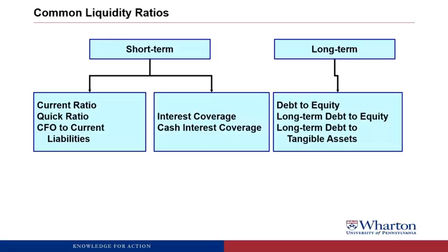We can put the liquidity ratios into three buckets, two short-term and one long-term. The first short-term bucket focuses on current assets and current liabilities — do you have enough current assets to cover upcoming current liabilities? The second looks at whether you'll have enough liquidity to cover interest costs. The long-term liquidity ratios address riskiness: is the firm too highly levered, with a potential risk of bankruptcy due to excessive debt relative to equity?